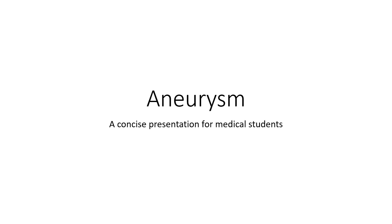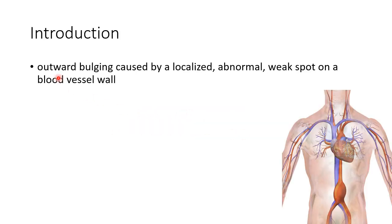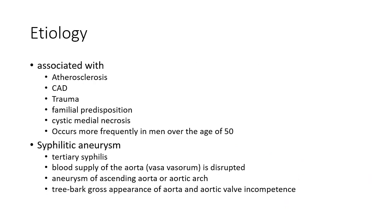Hello guys, this is Indian Medico. In this video we are going to see about aneurysm — this is a concise presentation for medical students. Aneurysm is an outward bulging caused by a localized abnormal weak spot on a blood vessel wall. This picture shows an aortic aneurysm. Now let us see about the etiology of aneurysm.